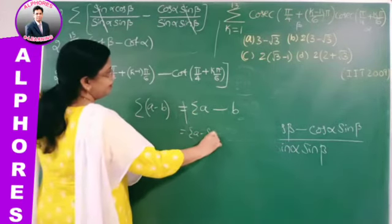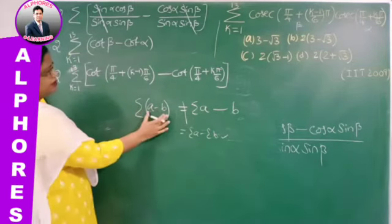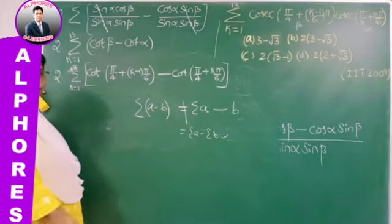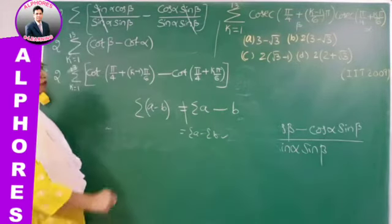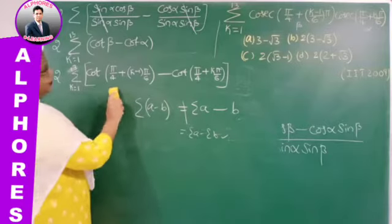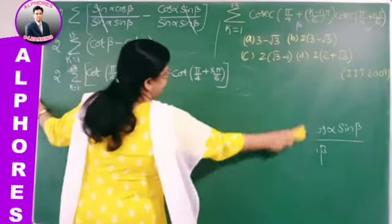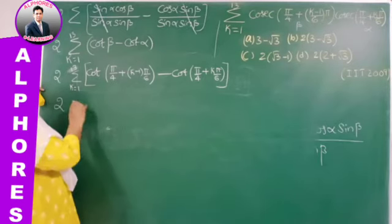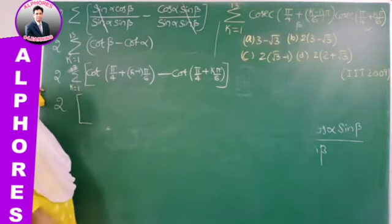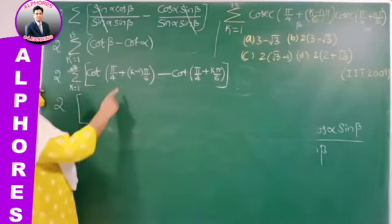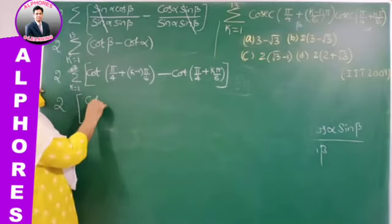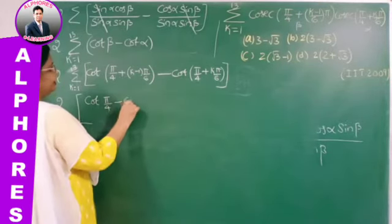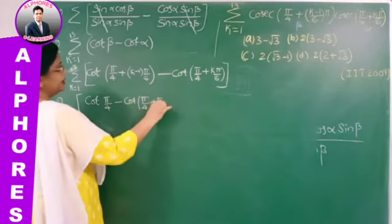Now observe this next problem. We start with a sine-based series: 1/(sin 45° · sin 46°), and continuing terms with a pattern. You might think we just did a similar problem — but look carefully at the denominator terms. There is a lot of twist here. Read the problem very carefully: the angles go 45°, 46°, then skip to 47°, 48°, and so on.